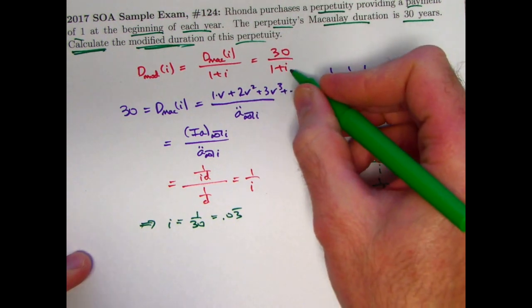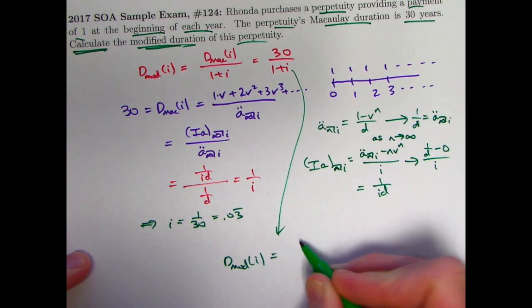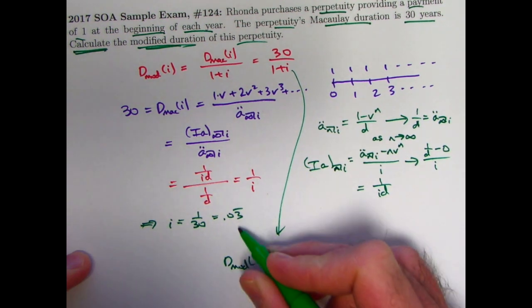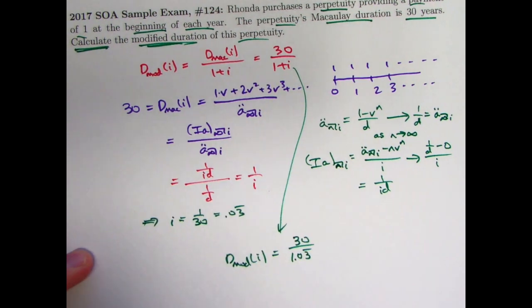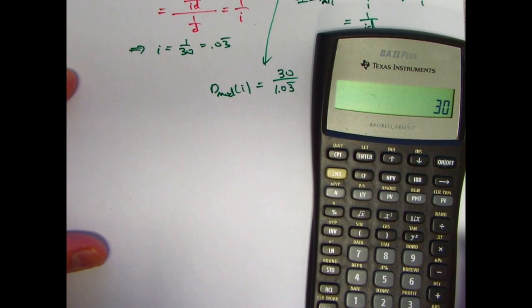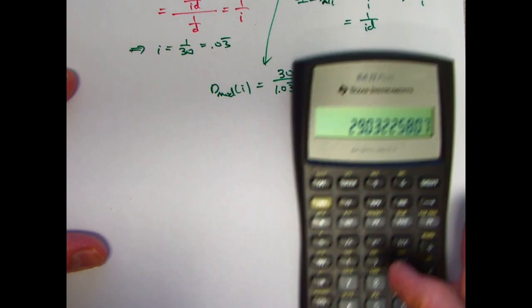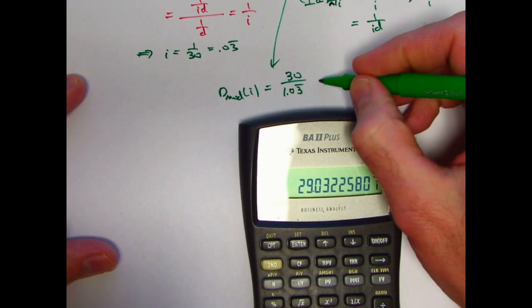And now you can finish the problem. So the modified duration is going to be, well, I guess I could plug in the i equals 1/30 here, but I'll go ahead and just calculate it. 30 divided by 1.03 with 3 repeating. Use your calculator now. 30 divided by 1.03333333 gives you about 29.03.